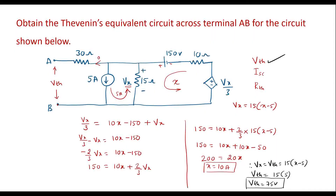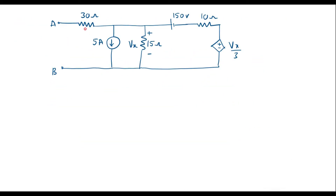Now let me calculate ISC, the short circuit current. In this circuit, terminals A and B are open. To calculate ISC we short terminals A and B — when we short A and B this loop becomes a closed loop and current starts flowing, known as the short circuit current. Let me draw the equivalent circuit with A and B shorted; the current through this loop is now ISC.